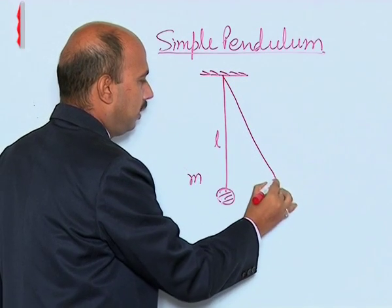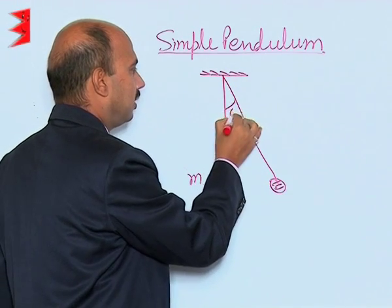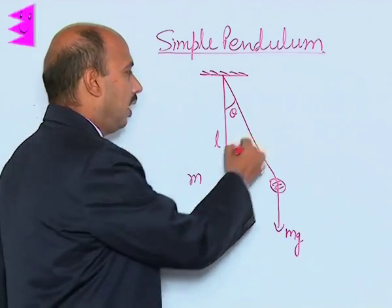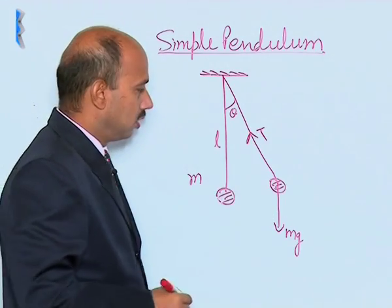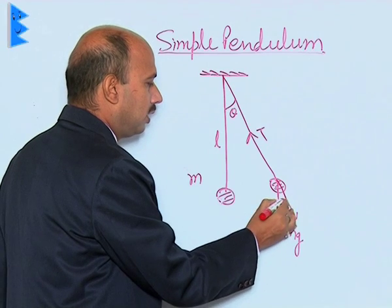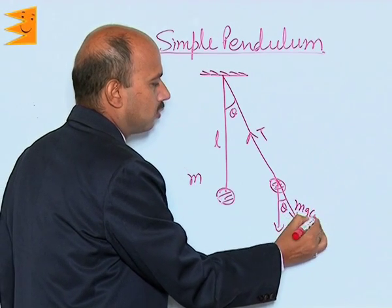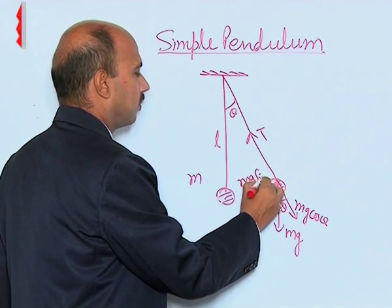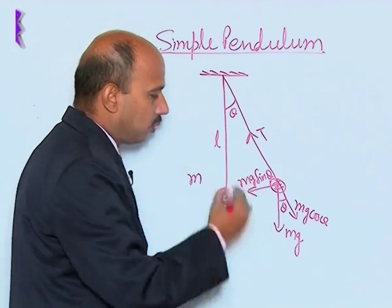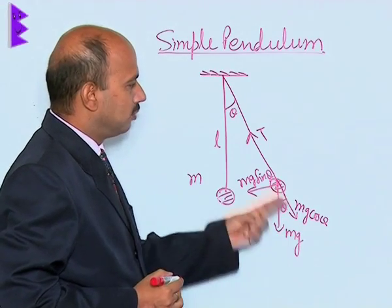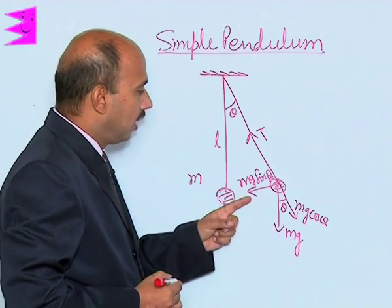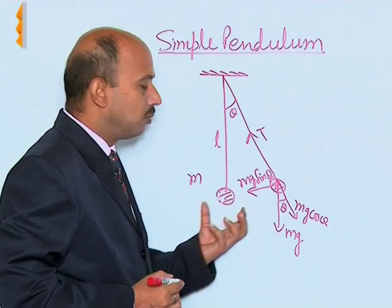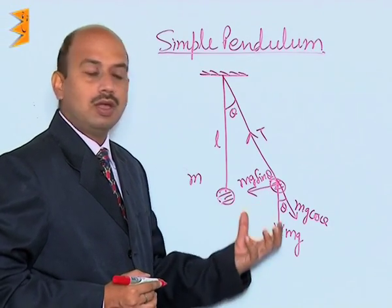When this pendulum is displaced to this position by angle theta, the weight is acting vertically downward and tension T is acting to this side, at angle theta. We can take this as theta. So it gives components m g cos theta and m g sin theta. The weight has two components: m g cos theta, which balances the tension providing centripetal force, and m g sin theta towards the mean position. Because of m g sin theta, the pendulum tries to return to the mean position — this force is known as the restoring force.